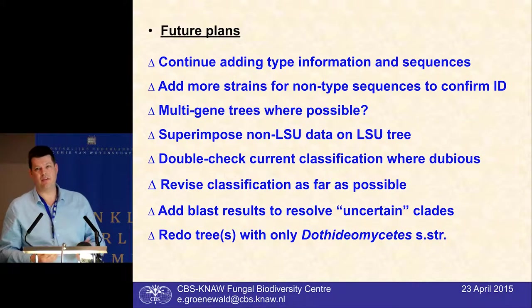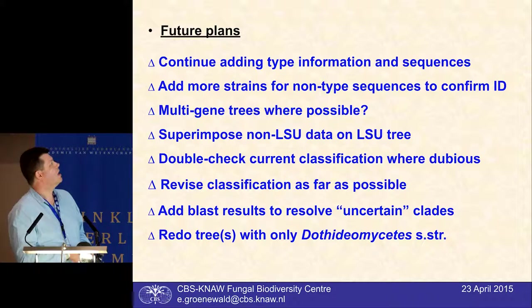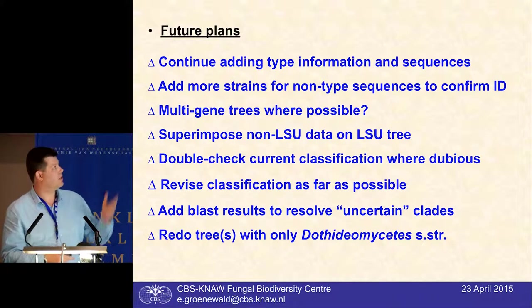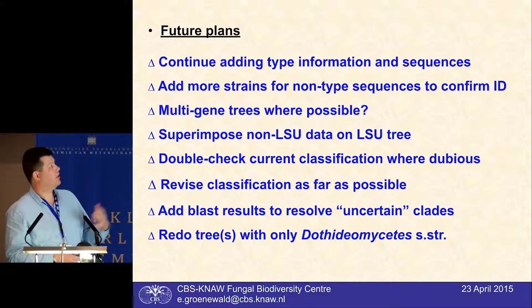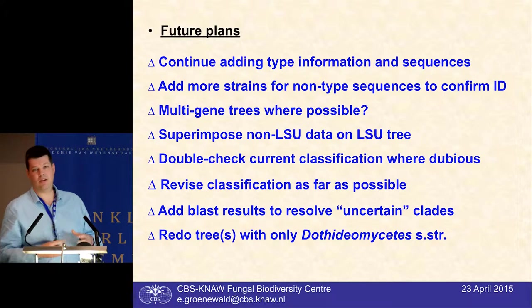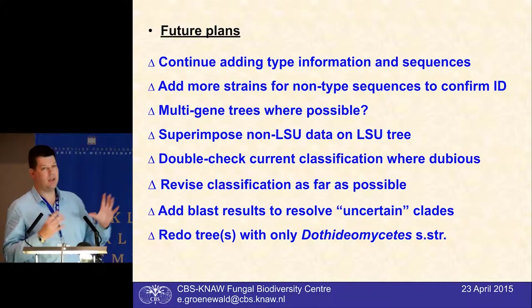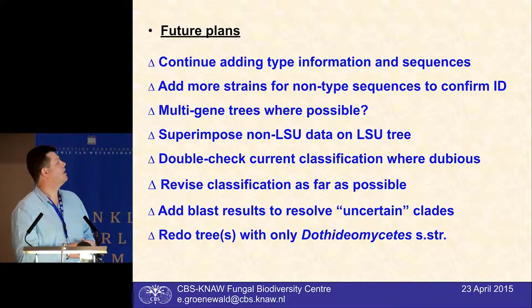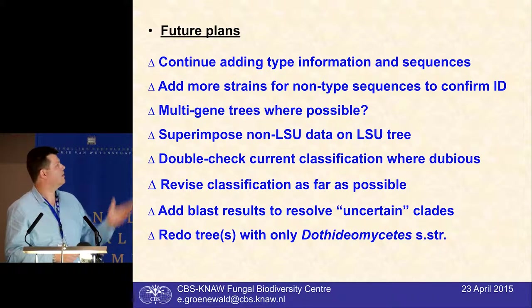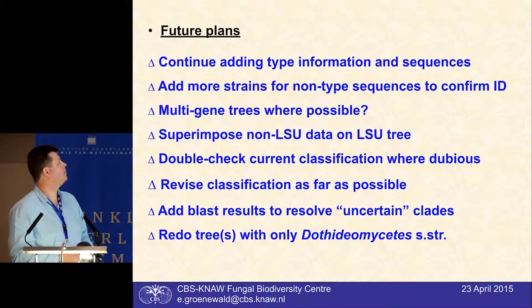Some future plans: we need to continue updating this type database, add sequences, add more strains for things not known from types to be certain that the ID is correct. Multigene trees where possible, add non-LSU data to the LSU tree to see where these things are supposed to go, double-check the current classification, and also remove things that don't strictly belong in the Dothideomycetes.